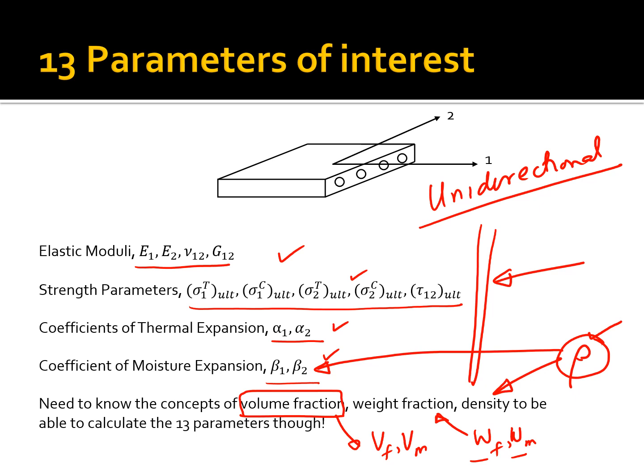So the bottom line is that we want to do macro mechanics of a lamina. But in order to do the macro mechanics of a lamina, we need these 13 parameters. And that's what this whole chapter is all about. Because the macro mechanics of a lamina will allow us to do the macro mechanics of a laminate, and laminates are the ones which are in actual structures.